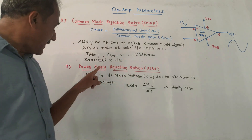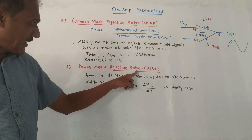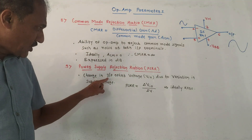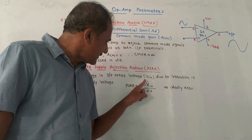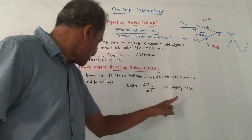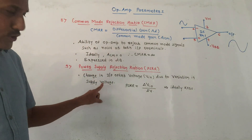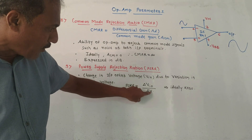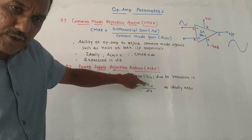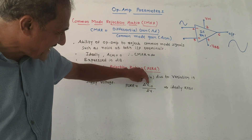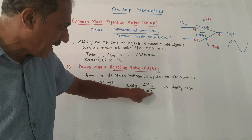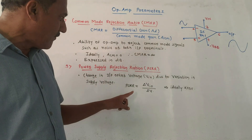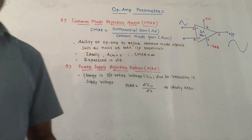The next parameter is Power Supply Rejection Ratio (PSRR). It represents the change in input offset voltage VIO due to variations in the supply voltage. Mathematically it is expressed as delta VIO upon delta V, where delta VIO represents the change in input offset voltage and delta V represents the change in supply voltage. Ideally the value of PSRR must be zero.